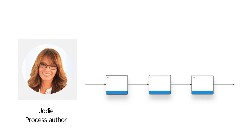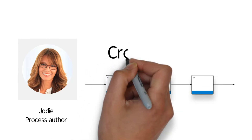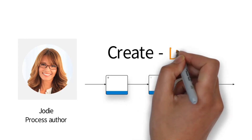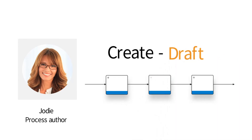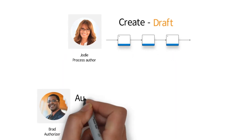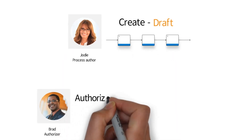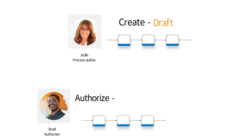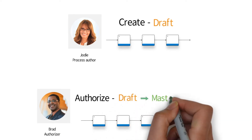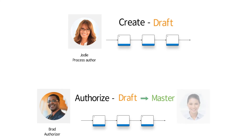Jodie, as a process author, will collaborate with department heads to create diagrams and maps. Maps are initially created as draft versions until they have been authorised by the assigned stakeholders. Stakeholders are normally the people within the business who are accountable for the process. When the draft has been signed off, a master version is created ready for end users to consume.